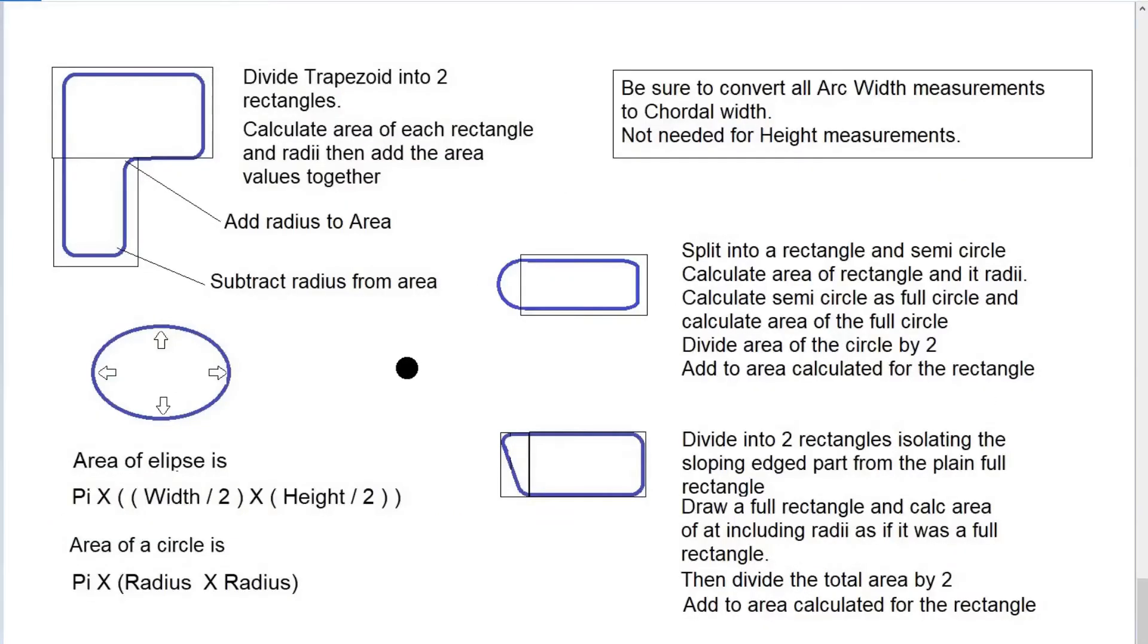The next part is if we've got odd shaped ports. We might have a port with a bridge in the middle and another port facing the other way, or a port with a rounded end or an angled end. Generally what we can do with these is simply divide them up into rectangles and do the area calculation for each rectangle as we would have done as described just before and in the previous video.